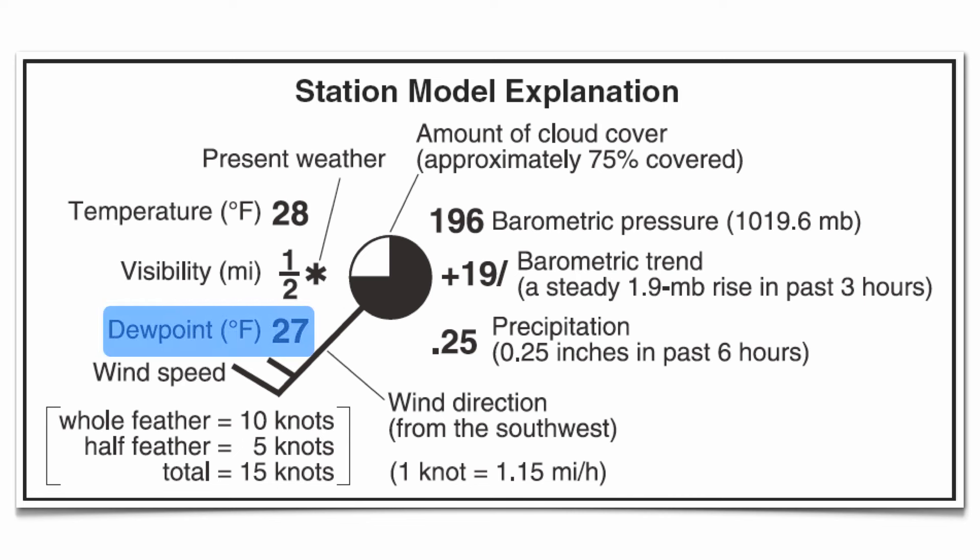Below your visibility and present weather is going to be your dew point. That's going to be a degrees Fahrenheit value. You'll notice that your air temperature and dew point are very close together in this example, which means you're going to get some precipitation soon in the form of snow.